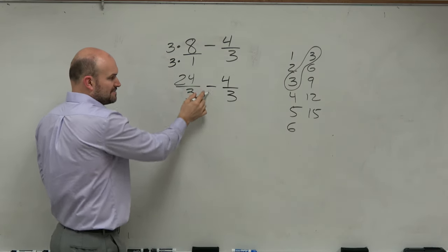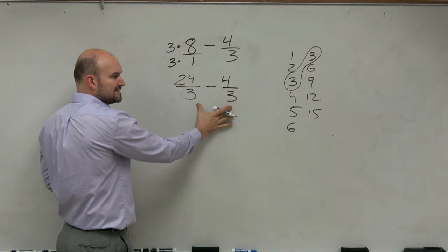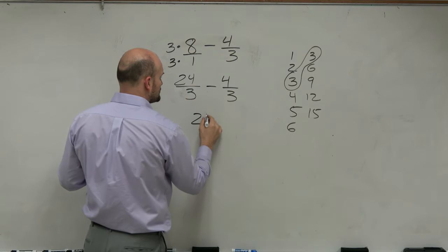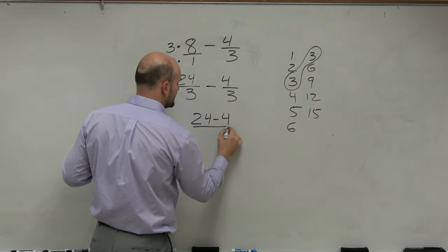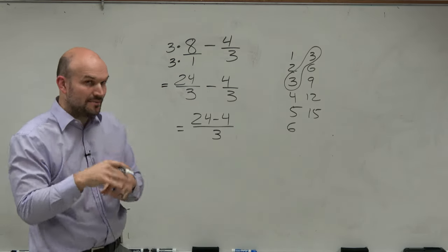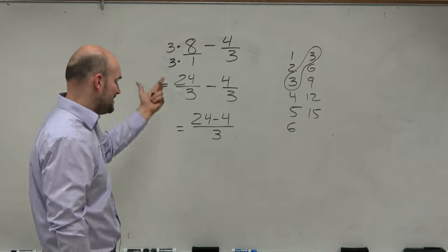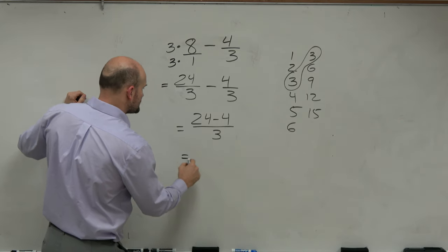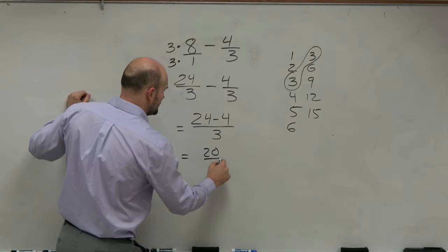Now I have 24 thirds minus 4 thirds. Now they have the common denominator. So basically, I'm just going to apply the operation to the numerator, leaving me with this common denominator. And then I can subtract 24 minus 4, which is going to leave me with 20 divided by 3.